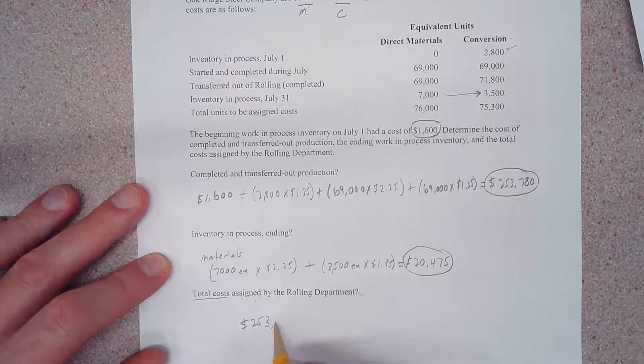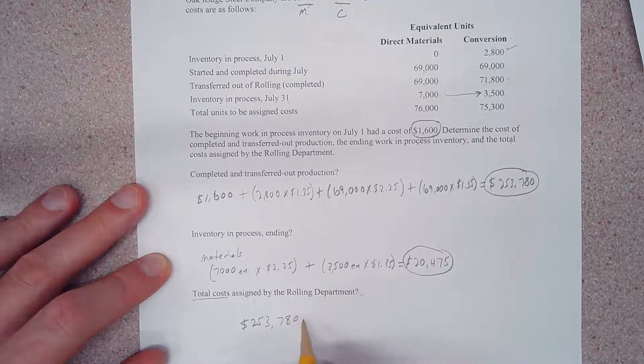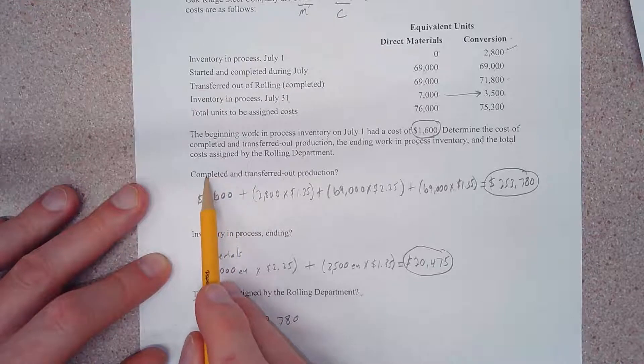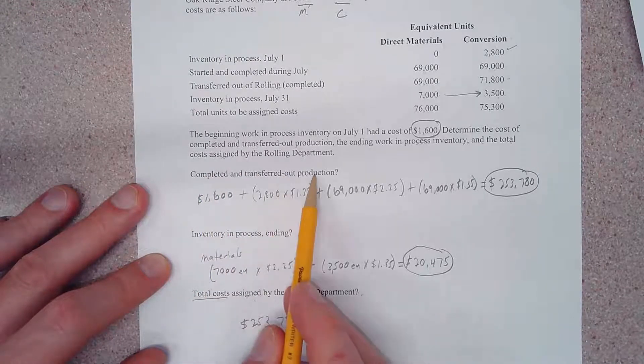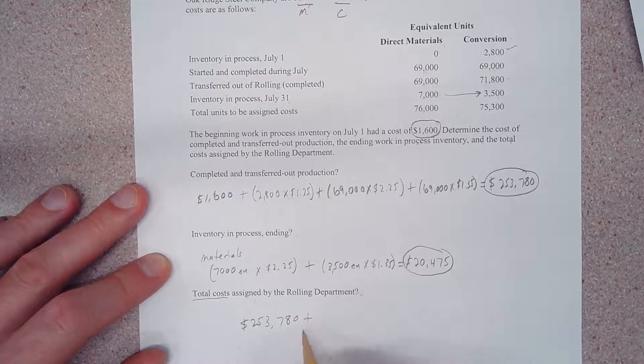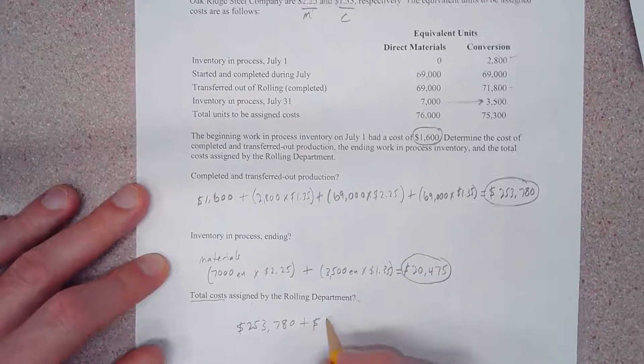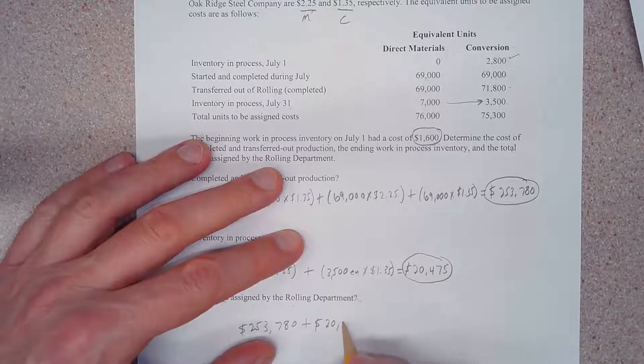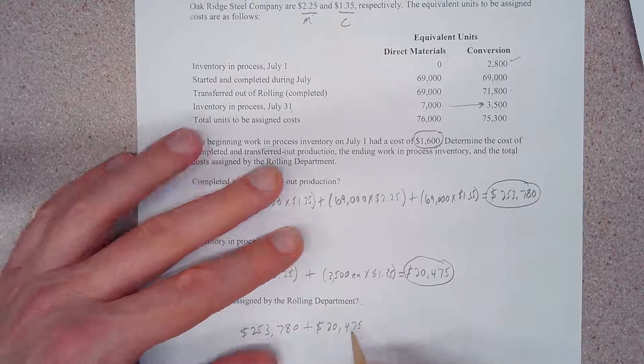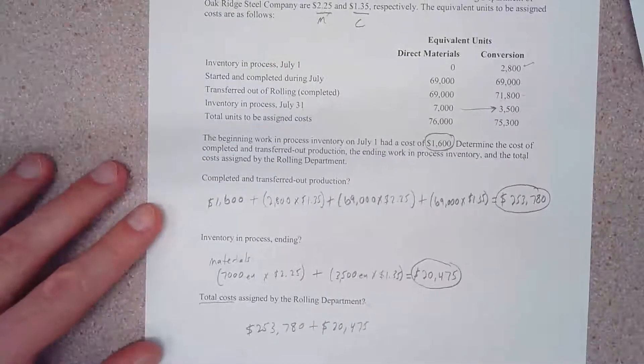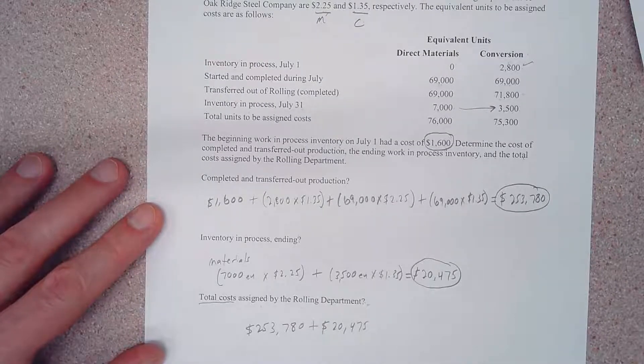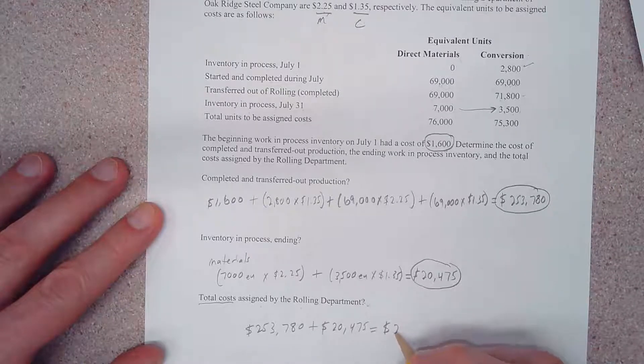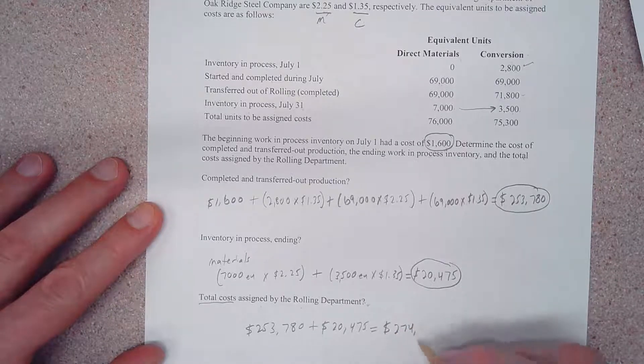the cost of production that has been completed and transferred out of production - $253,780 - and we're going to add to that our ending inventory value of $20,475. If we do that, we should come up with $274,255.